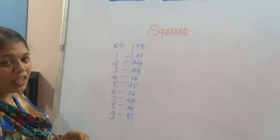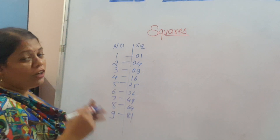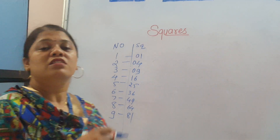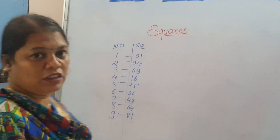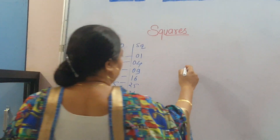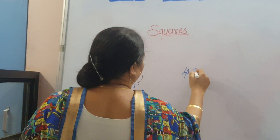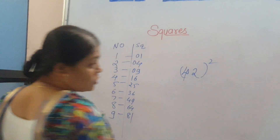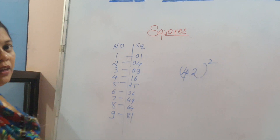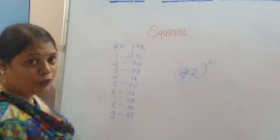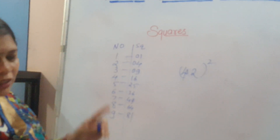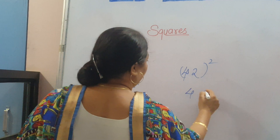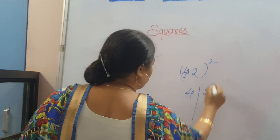Now, do you know these squares? You can find the square of any number using this method. Let's see — for example, if you want to find the square of 42. That means 42 × 42. But we won't do multiplication — we'll use the easy square method.